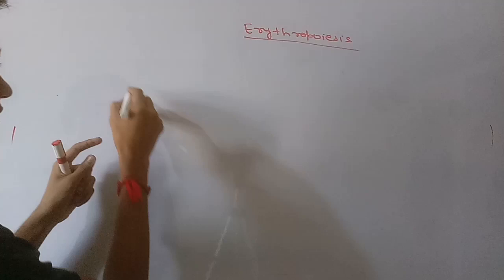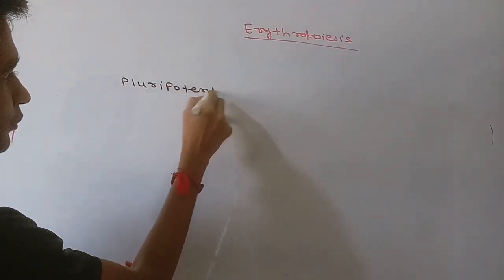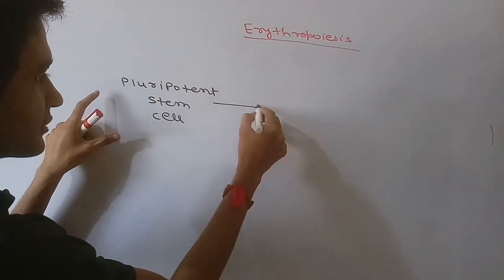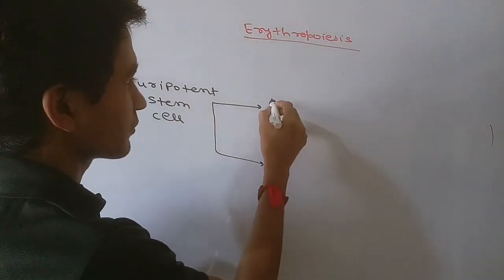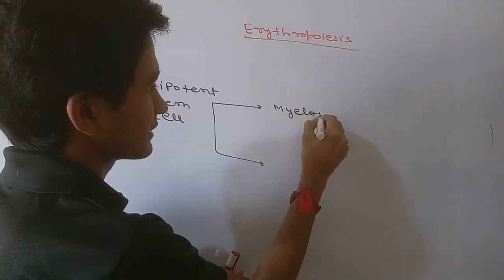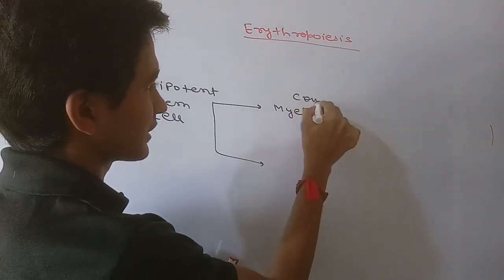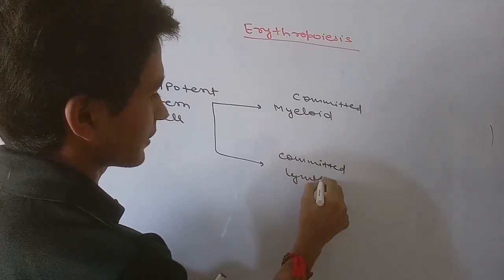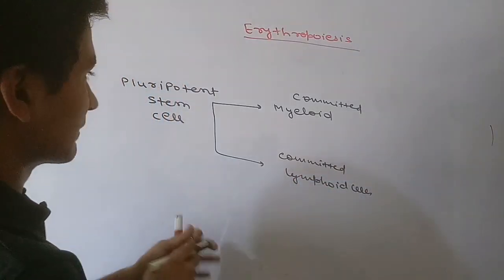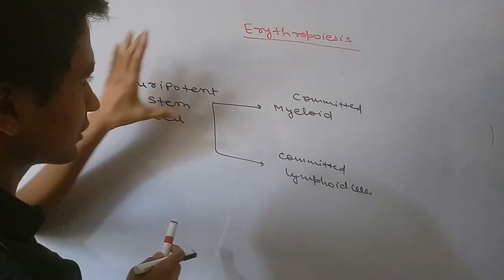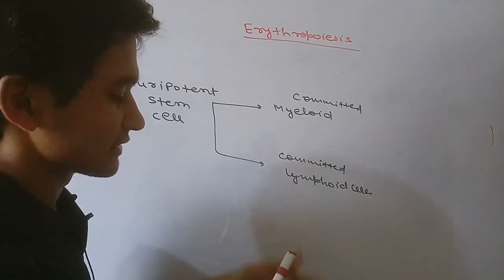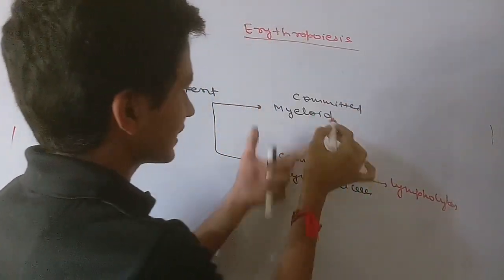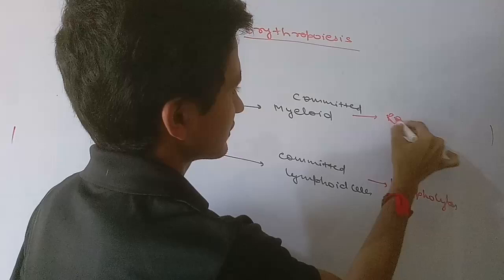The primitive cell for erythropoiesis is the pluripotent stem cell. From this pluripotent stem cell arise two types of committed cells: the committed myeloid cells and the committed lymphoid cells. The committed lymphoid cells will form lymphocytes, and the committed myeloid cells will form the remaining types of cells.